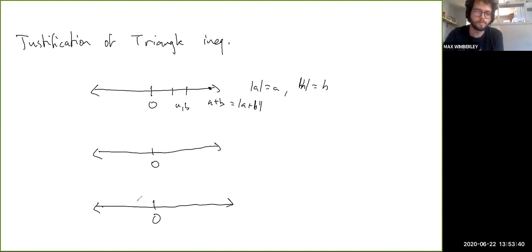And then down here I'm going to do a similar case, this is reflected. And then a plus b is over here. So that, I don't know, one, two, three, right? Then the only kind of weird case is if one of them is on one side and one of them is on the other.